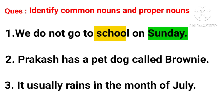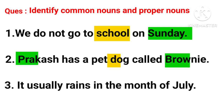I am highlighting common nouns in yellow and proper nouns in green. Second sentence: 'Prakash has a pet dog called Brownie.' There are three nouns: Prakash, dog, and Brownie. Prakash and Brownie are proper nouns, while dog is a common noun. Next sentence: 'It usually rains in the month of July.' Month is a common noun and July is a proper noun.